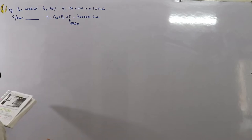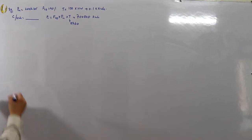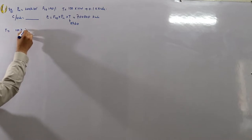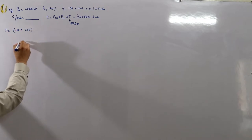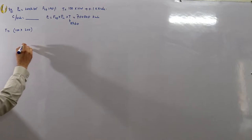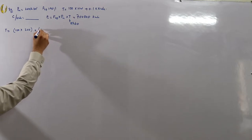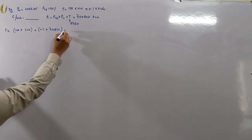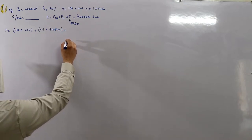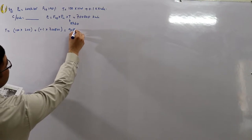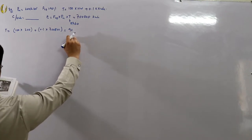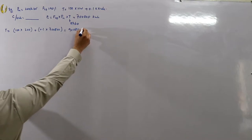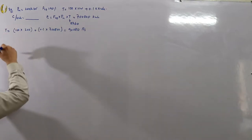The total cost T equals 100 × 200 plus 0.1 × 700,800, which comes out to be 90,080 rupees overall.